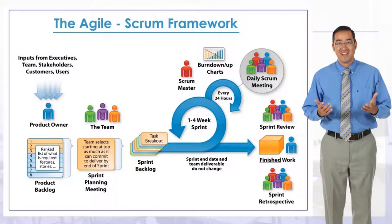Here's an overview of the agile Scrum framework. We start with the product owner, where all inputs come in from executives, stakeholders, customers, and users. The product owner owns all of these inputs. Then we have the team, which is responsible for executing the actual tasks or project at hand. The project manager's role is to manage the project, lead the team, and keep the team motivated.